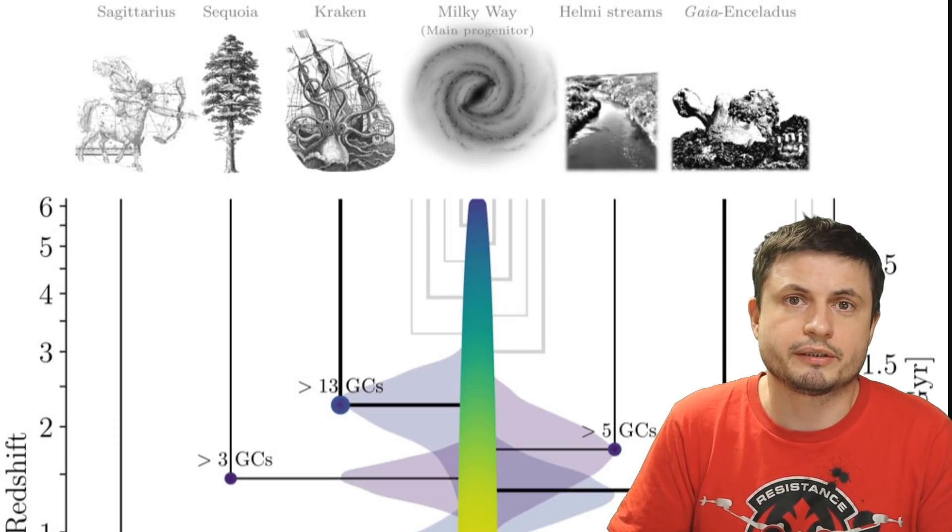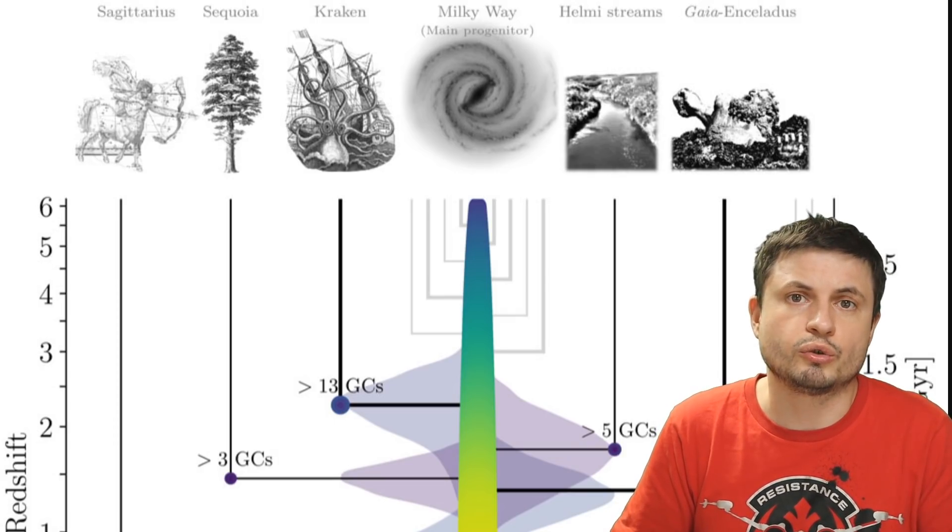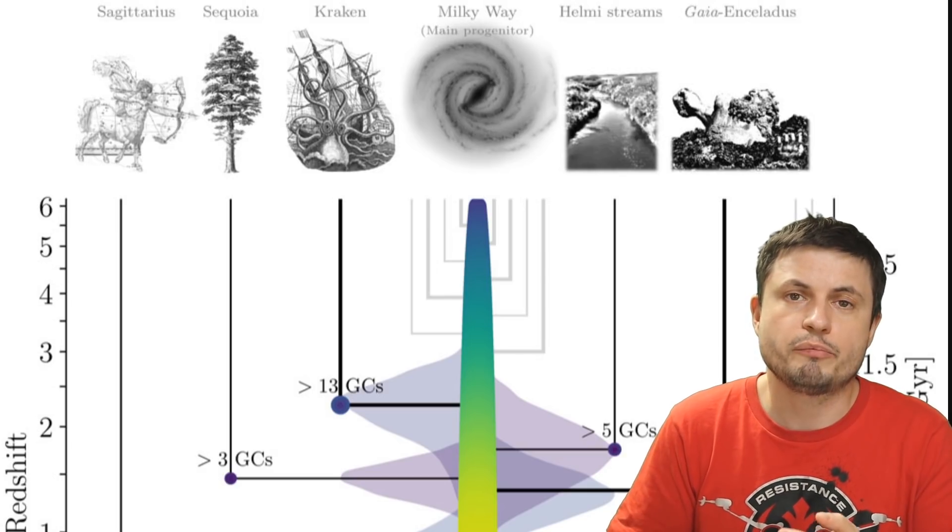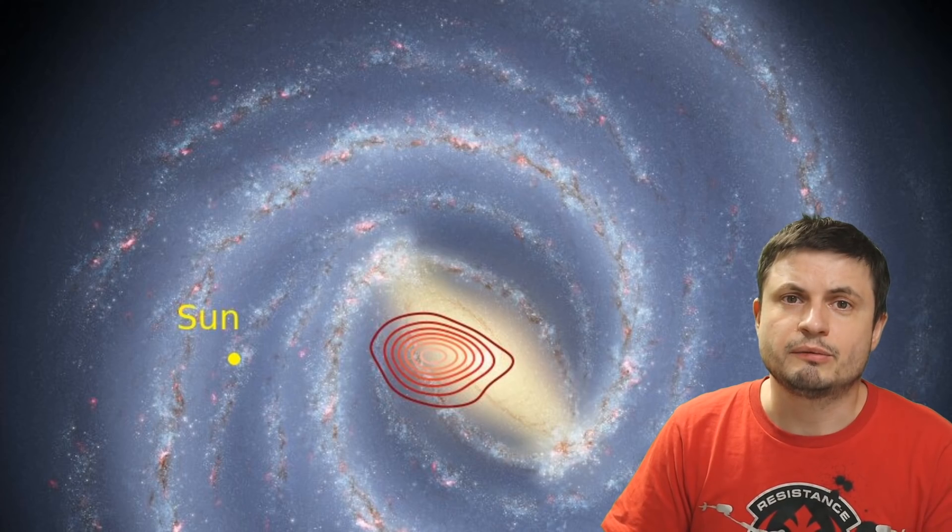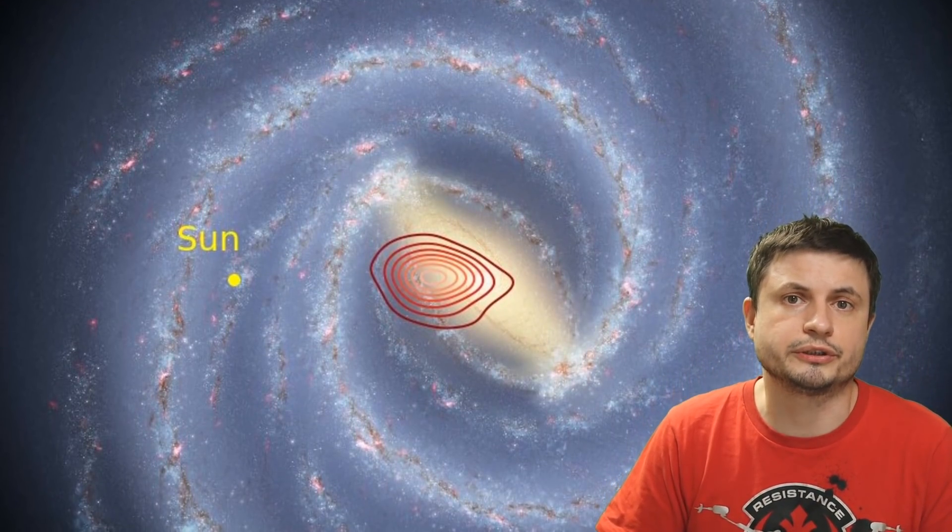But we still are learning more about these events because we don't really know when exactly they happened and how big some of these galaxies were. Naturally this makes sense because larger galaxies like the one we live in normally form by colliding with smaller galaxies over millions and billions of years, and we believe some stars in our galaxy today came from these early galaxies.